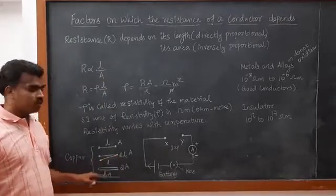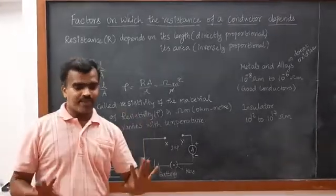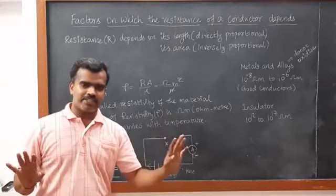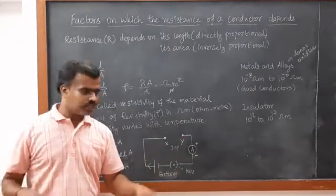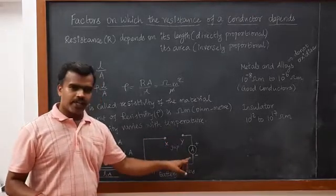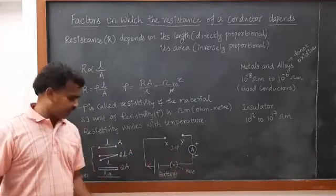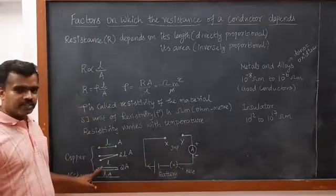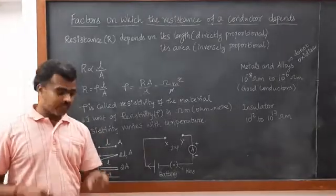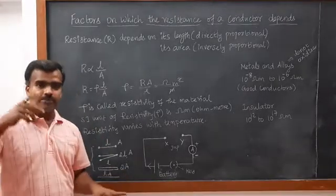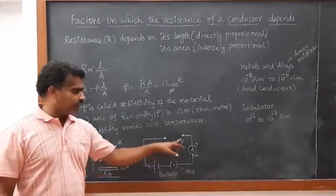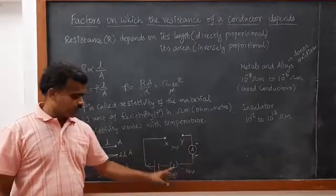In the second case, we use 2L but the same area of cross-section — 2 meters length and 1 meter squared area. We connect this wire and note the ammeter reading. In the third case, we use the same length of 1 meter but double the area, 2 meter squared, and note the ammeter value.